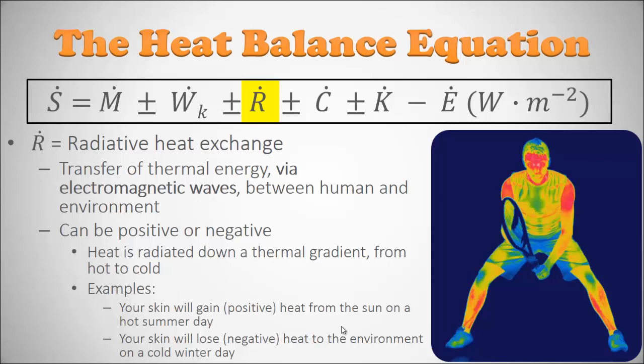Radiation can be positive or negative. On a hot sunny day your skin will absorb electromagnetic waves and heat up. On a cold winter day with no sun, all the heat your body naturally generates will radiate toward the cold environment. So radiation can act to heat the body up when the sun is out, or if it's cold with no sun, your body can give up heat via electromagnetic waves to the environment.